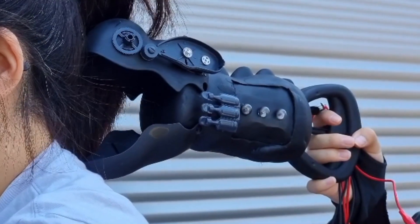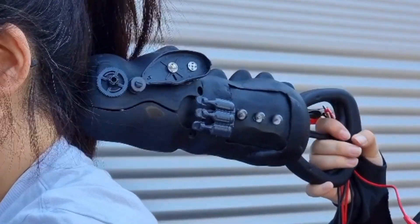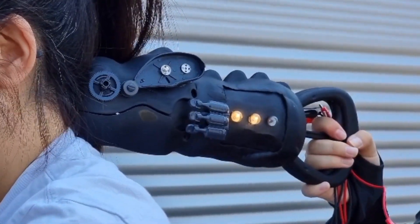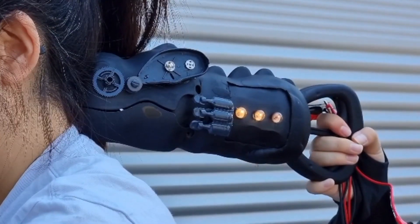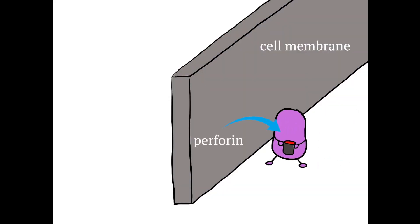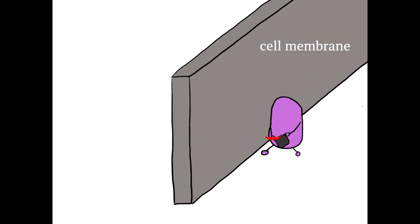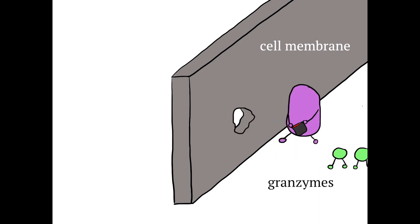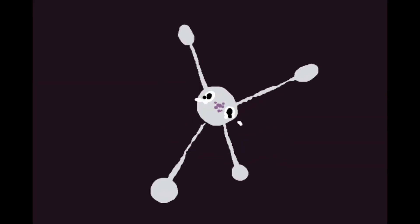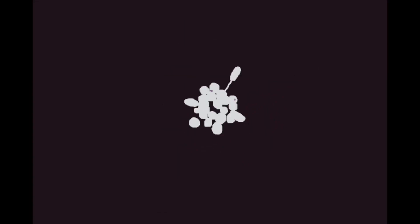Once the binder binds to CD19, the transmembrane and endodomain will signal the activation of CAR. Once activated, your CAR will release perforin, making a pore on the cancer cell surface, for you to inject granzymes, inducing the cancer cell to go through apoptosis.